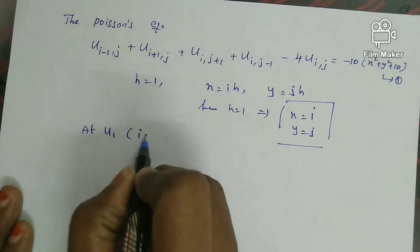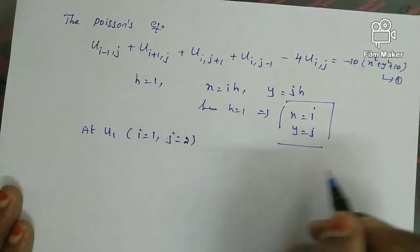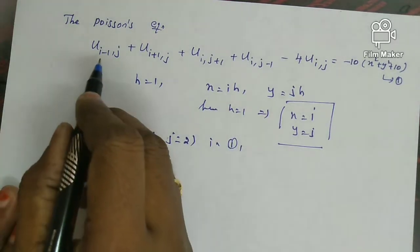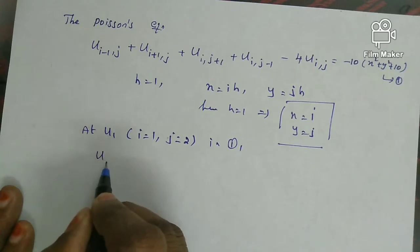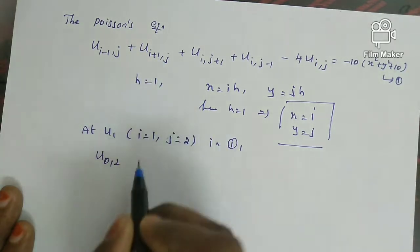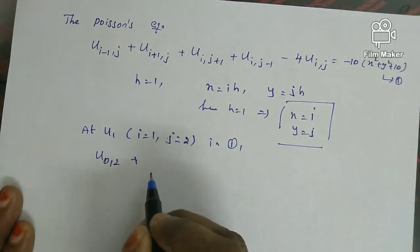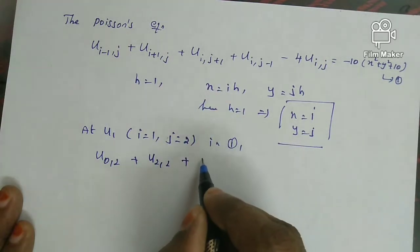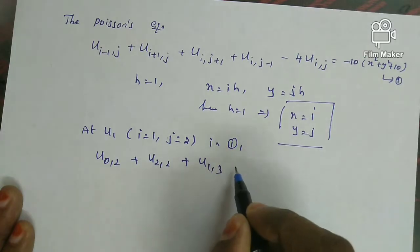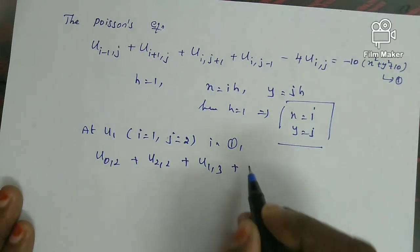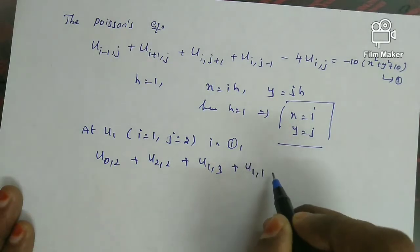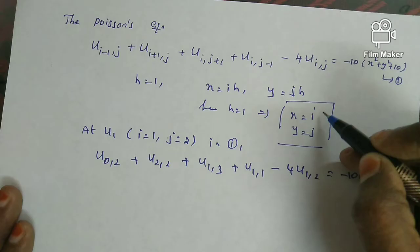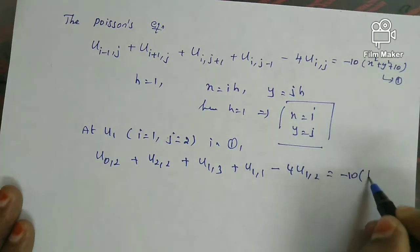At mesh point u1 with i equals 1 and j equals 2, substituting into the five-point formula gives: u(0,2) plus u(2,2) plus u(1,3) plus u(1,1) minus 4·u(1,2) equals h² · F(1,2). The right-hand side equals minus 10 times (1 squared plus 2 squared) plus 10, which is minus 10 times (1 plus 4) plus 10, giving minus 4·u1 on the left side.